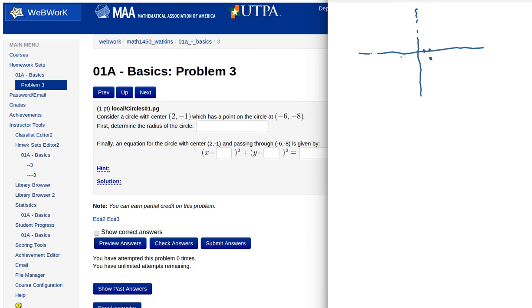We know that there's a point on the circle at negative 6, negative 8. 1, 2, 3, 4, 5, 6, 7, 8.